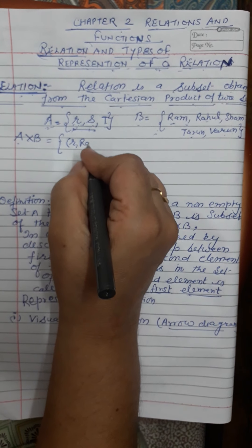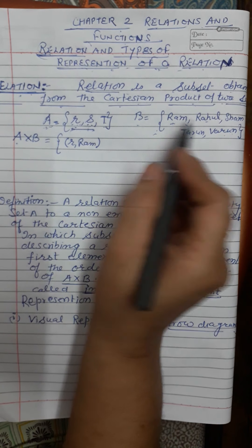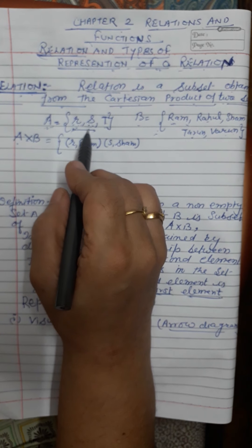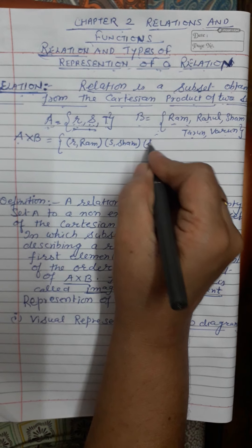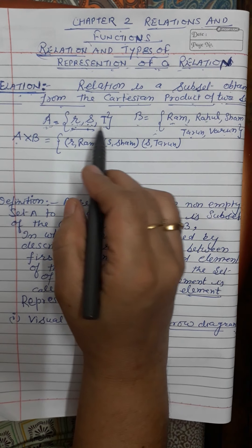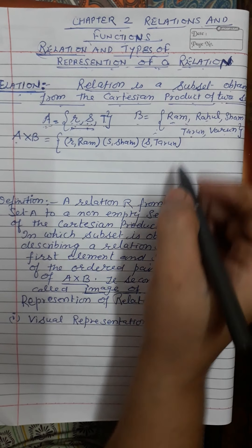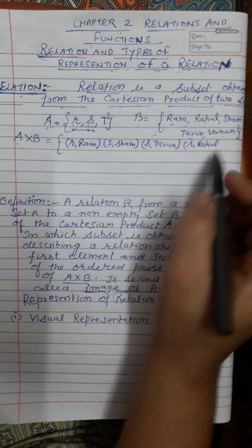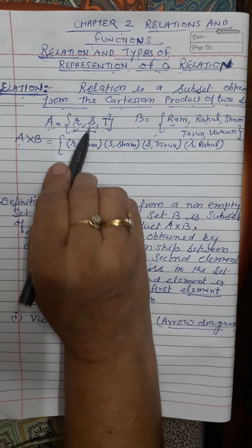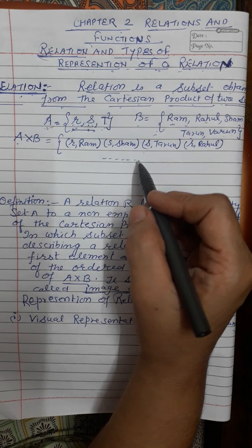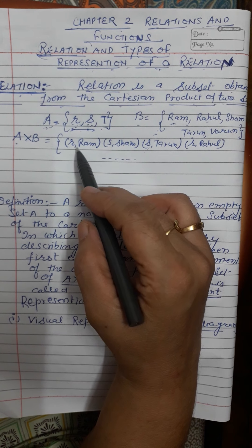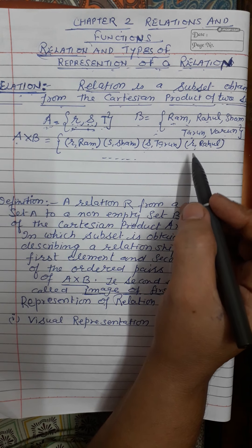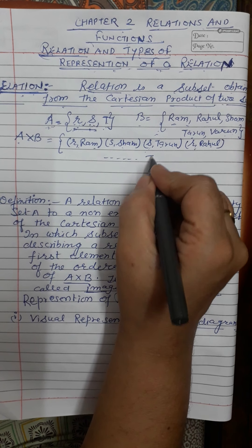So I am writing the ordered pairs here: (R, Ram), (S, Shyam), (S, Tarun), (R, Rahul). Among our fifteen ordered pairs, we have (R, Ram), (S, Shyam), (S, Tarun), (R, Rahul), and (T, Varun).